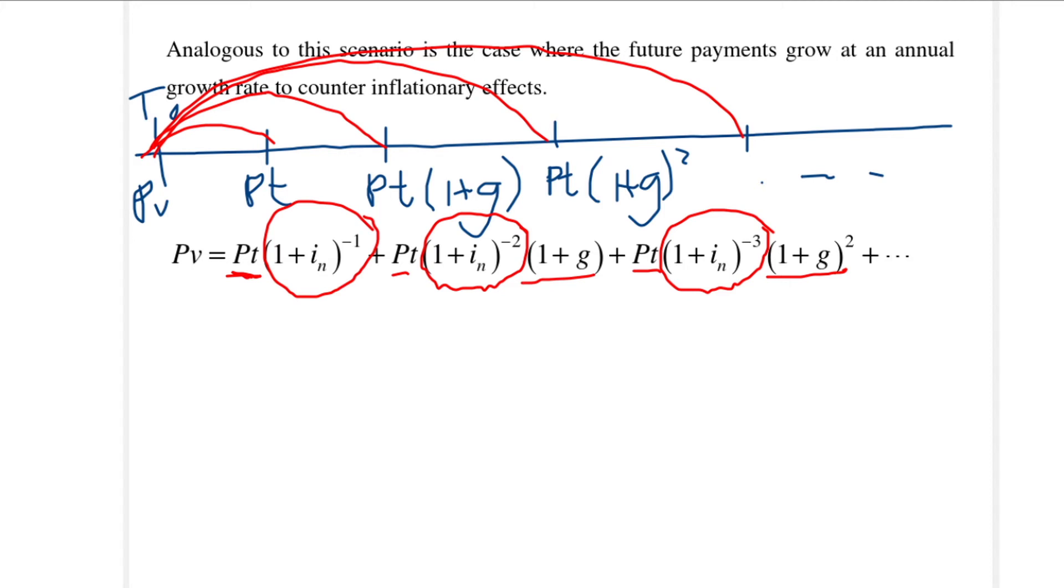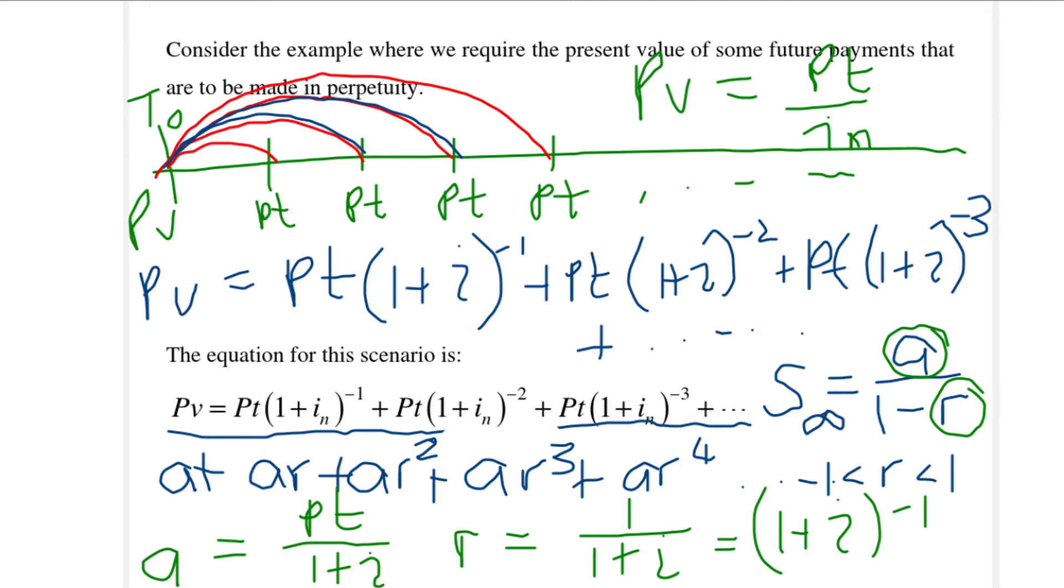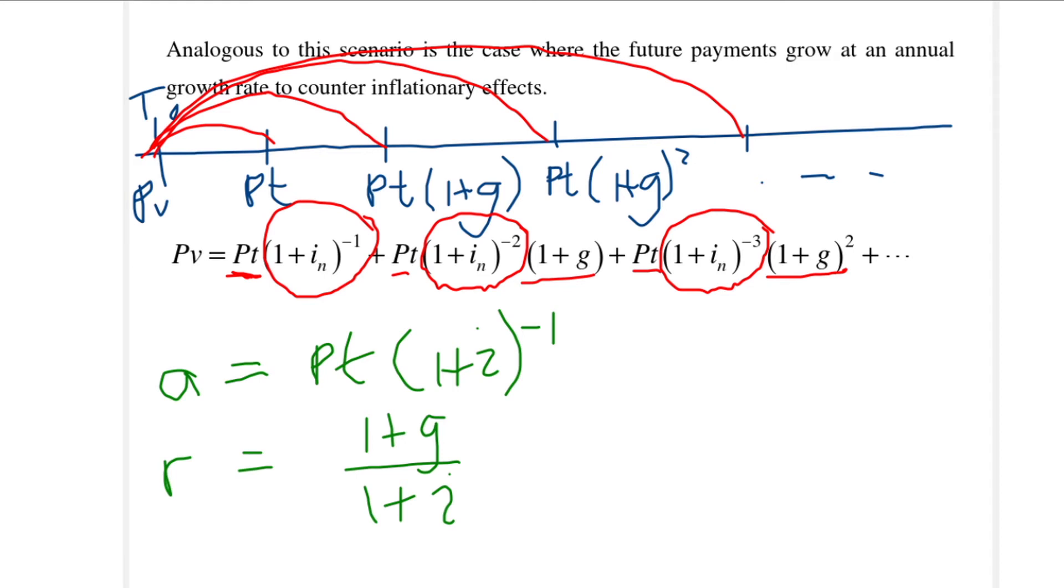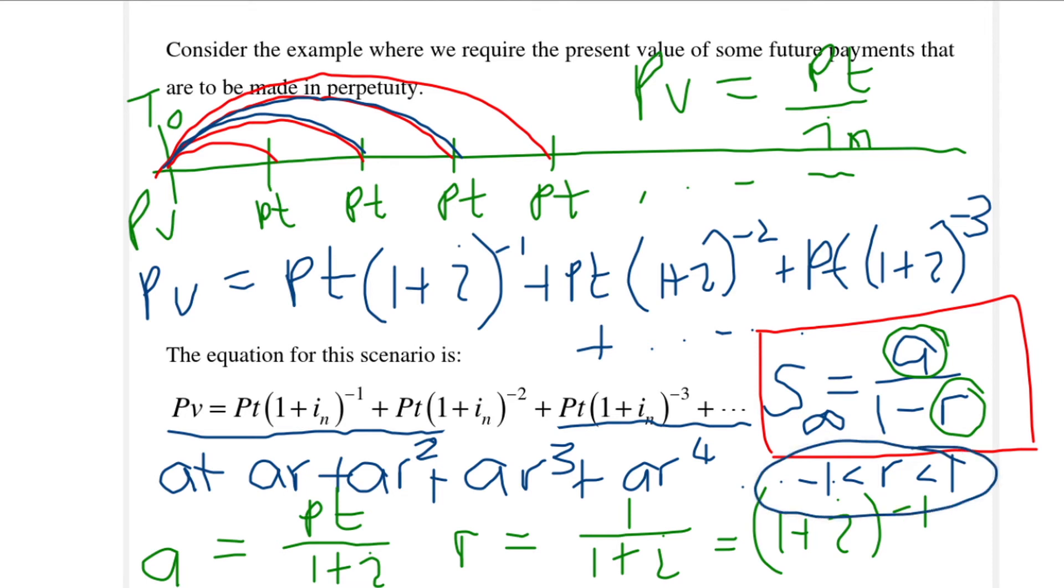This is a geometric series and the sum of an infinite geometric series. You can recognize that your A is equal to the very first term and that your R is equal to 1 plus G over 1 plus I. If you substitute it into the formula for the sum of an infinite geometric series, you will get the formula for a growing perpetuity. The present value is equal to payment over IN minus G. There is a restriction: IN minus G must be greater than 0 and that is because my R must lie between minus 1 and 1.